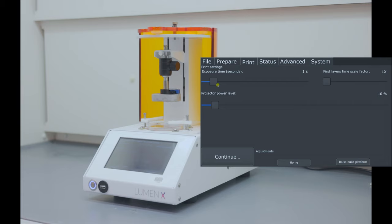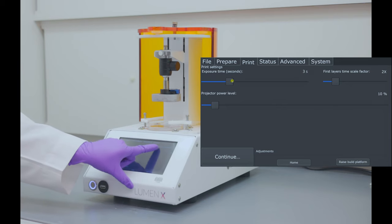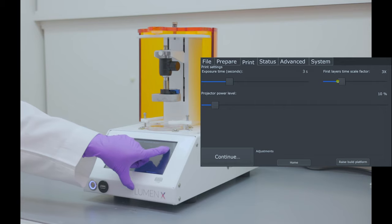But when we are working with a new material, we may have to optimize these settings as needed. So, for PEGDA Start photo ink, the settings are: the exposure time needs to be 3 seconds, and the first layer time scale factor is 4, and the power level has to be 20 milliwatts per centimeter squared.